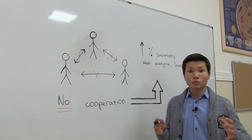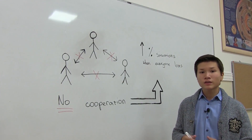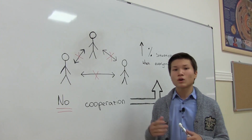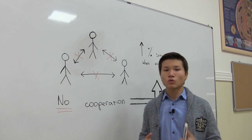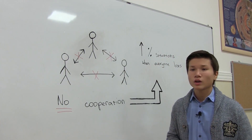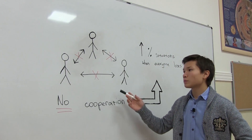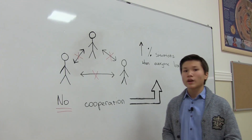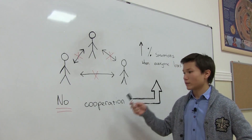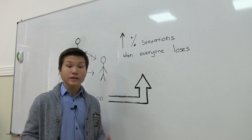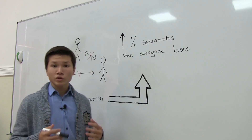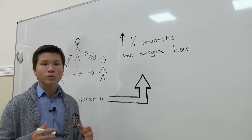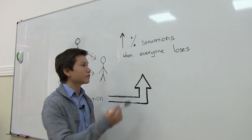Despite this fact, Game Theory is everywhere around us. And to prove it, let's get acquainted with one main paradox of Game Theory, which tells that if people don't cooperate with each other and think only of themselves, then often situations where everyone loses are developed.